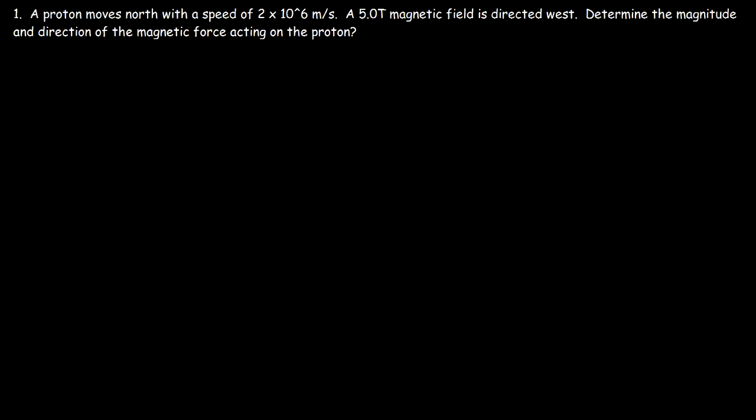A proton moves north with a speed of 2×10⁶ meters per second. A 5 Tesla magnetic field is directed west. Determine the magnitude and direction of the magnetic force acting on the proton. Let's start with a picture — the proton is moving north and the magnetic field is directed west.